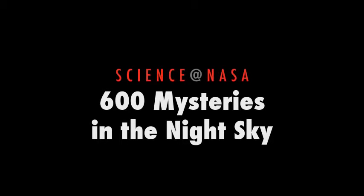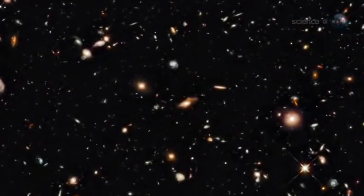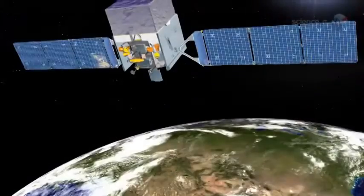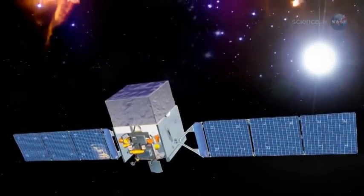600 Mysteries in the Night Sky, presented by Science at NASA. The Universe is a big place and there are a lot of things out there that astronomers can't identify. NASA's Fermi Space Telescope has just found about 600 examples.